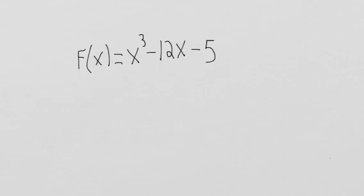We want to find the x-value for the max and the min of this function. If we look at f(x) = x³ - 12x - 5, we know that this has an end behavior of down, up. So it's probably going to be loopy where it hits a max, comes down, hits a min, and then goes up. We want to find the actual x-value where the max and minimum occur.